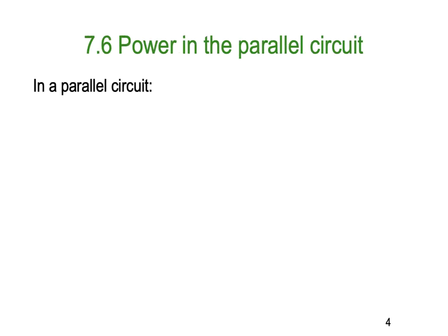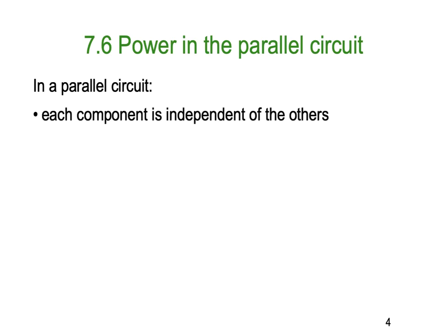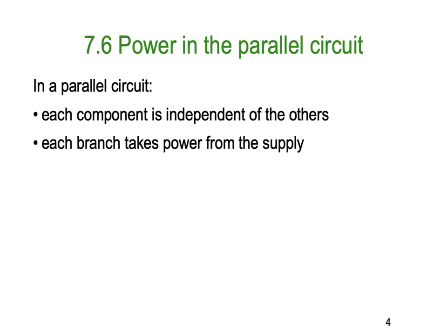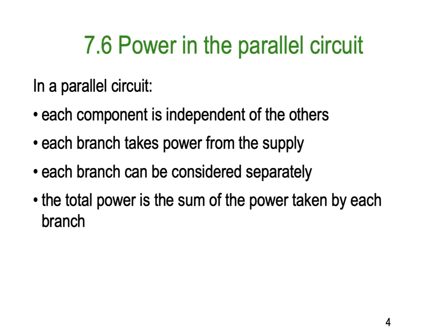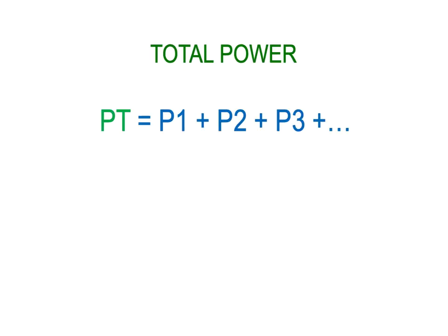The power in a parallel circuit: each component is independent of all the others from a power perspective. Each branch takes power from the supply — that's why they're independent — and each branch can be considered separately when looking at power. The total power is the sum, or the addition, of all the power taken by each of the branches. In other words, power total equals power 1 plus power 2 plus power 3, and so on.